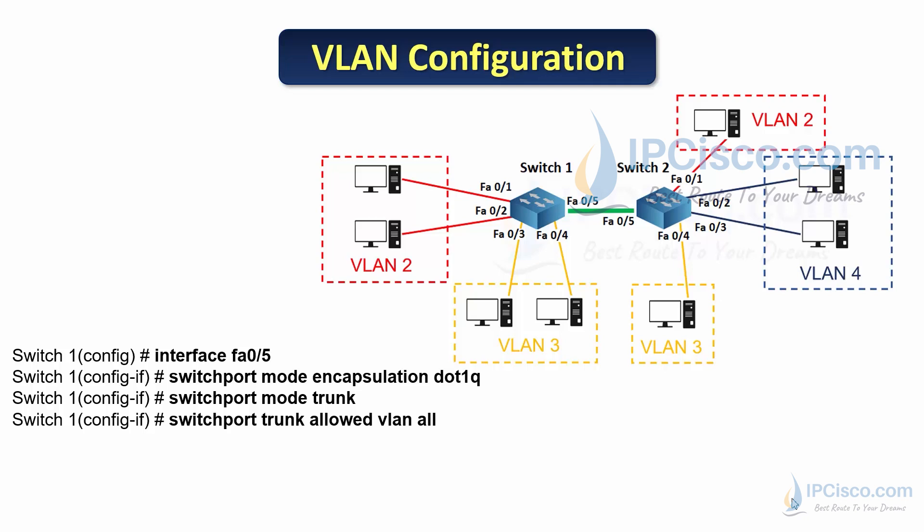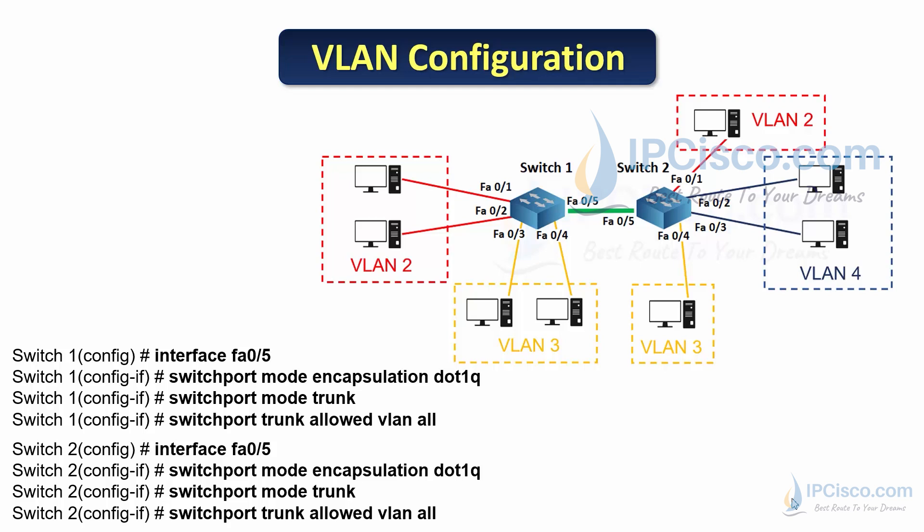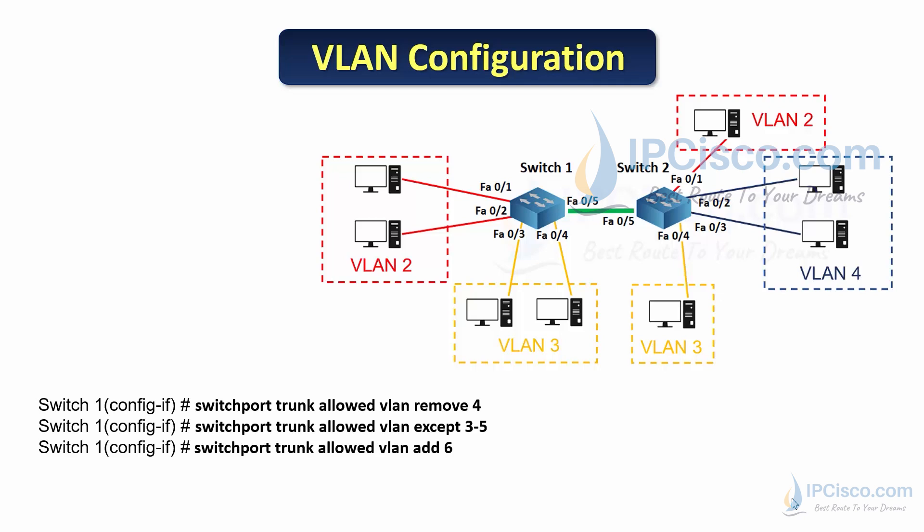There is also a trunk port between the switches — FastEthernet 0/5. To configure it as trunk, we go to the interface and use 'switchport trunk encapsulation dot1q', then 'switchport mode trunk', and 'switchport trunk allowed vlan all' to allow all VLANs. The same configuration is done on Switch 2. On trunk ports, we can also use commands to remove a specific VLAN, allow a range of VLANs (e.g., 3 to 5), or add VLAN 6 to the allowed list.